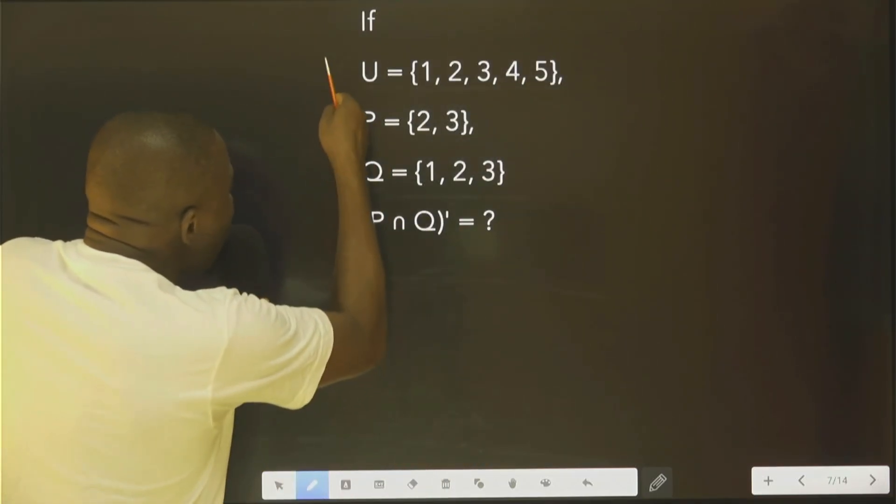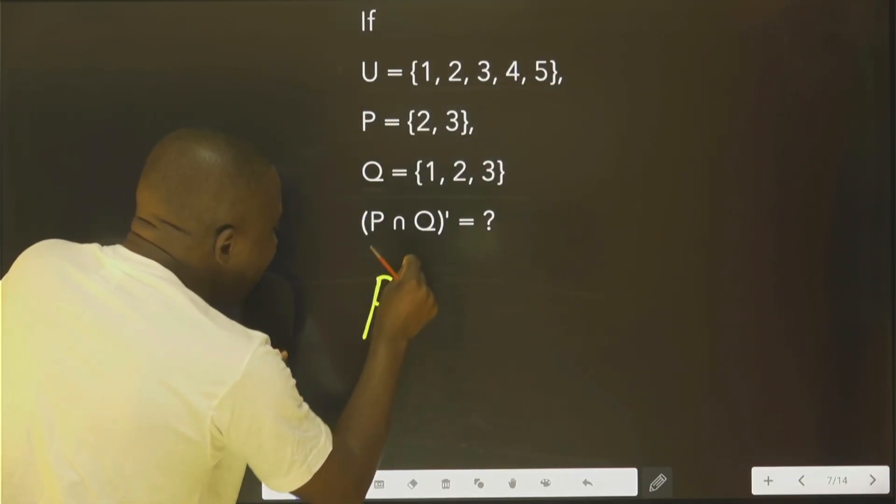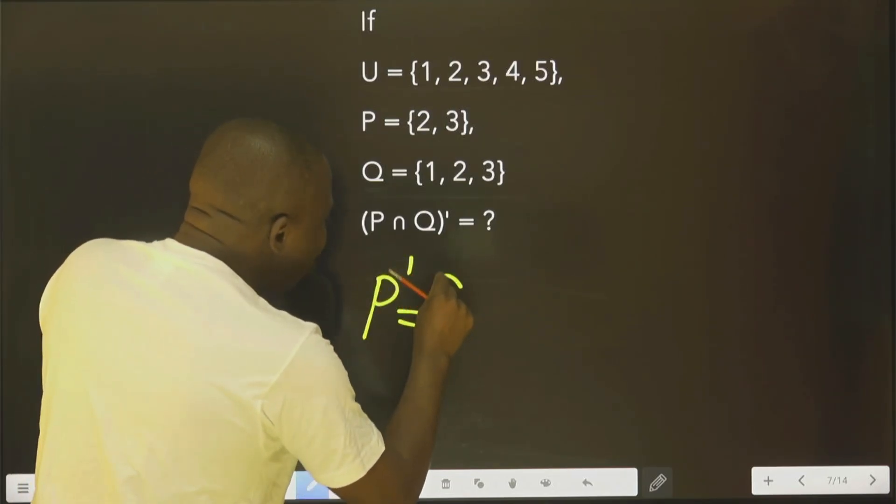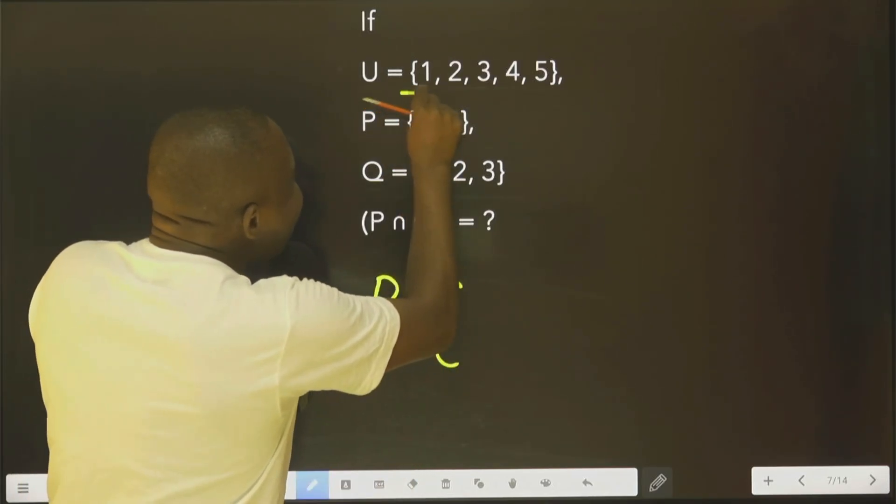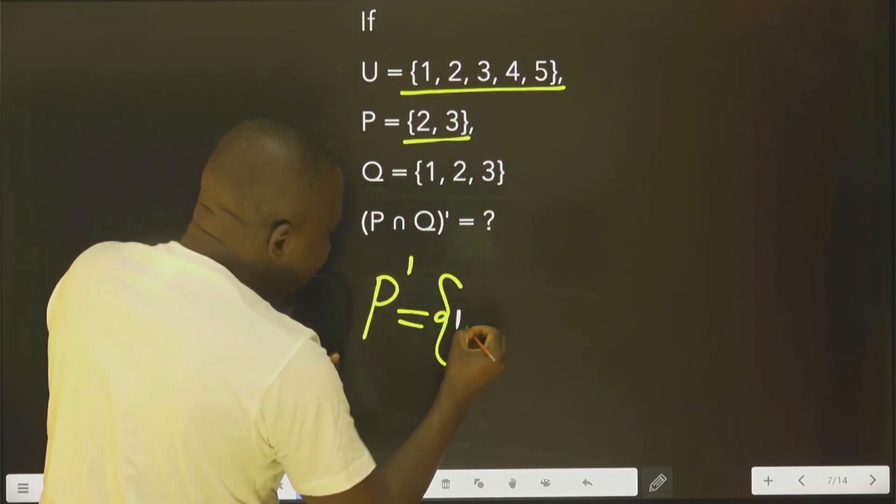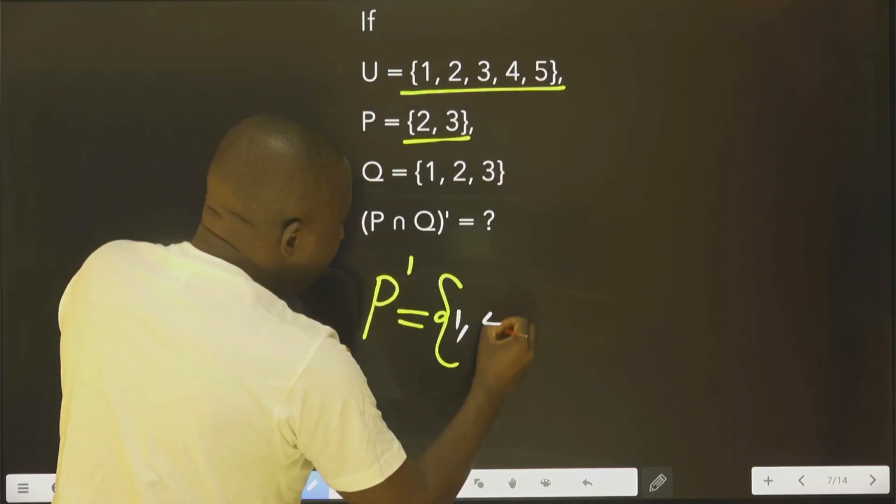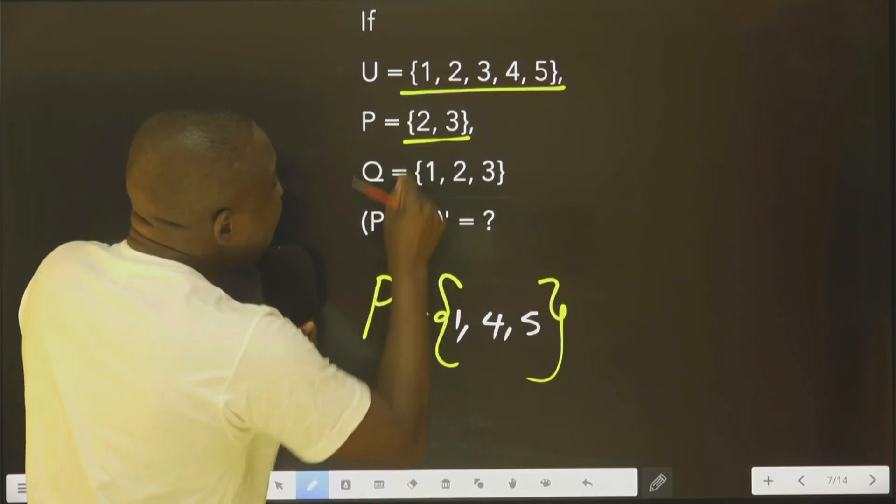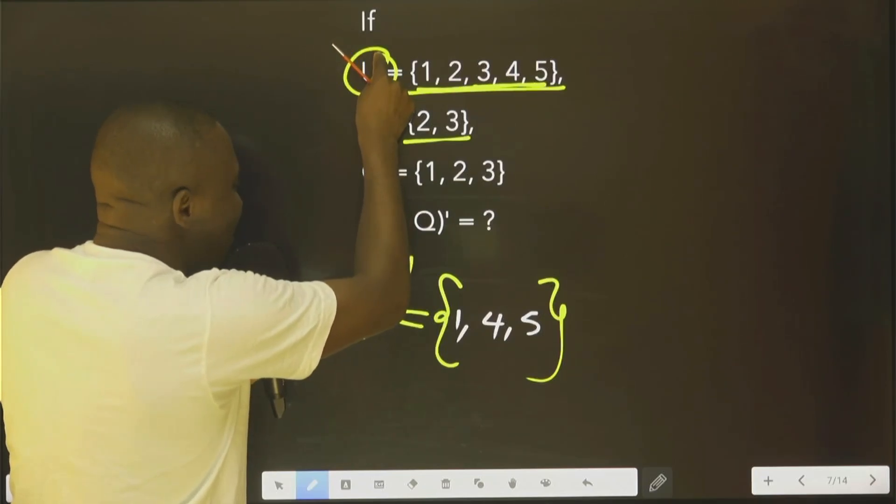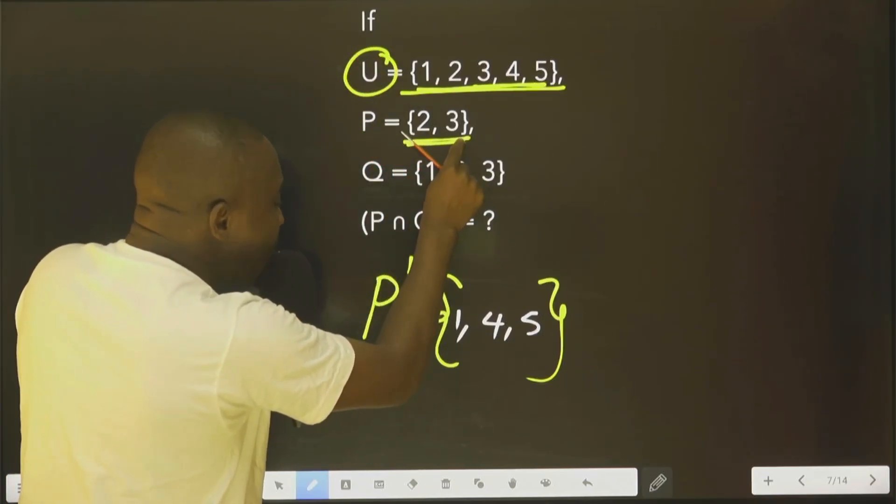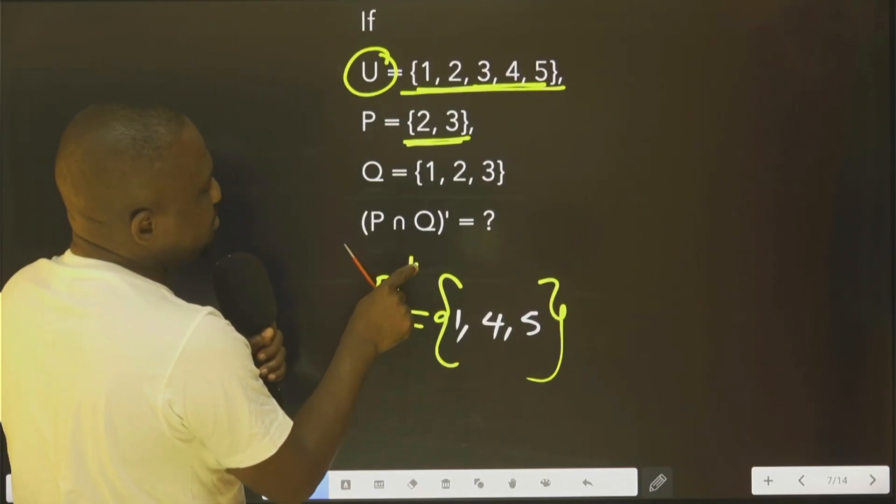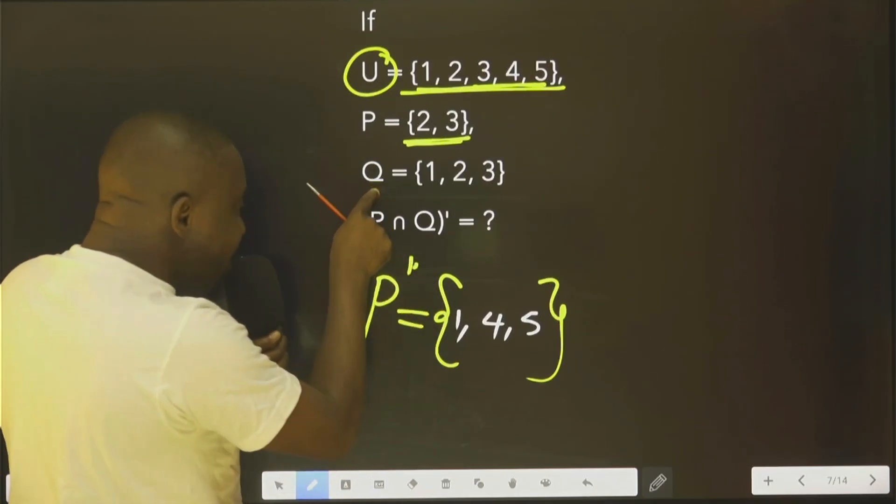For instance, if you want to find the complement of P, those are the elements in the universal set that are not in P, which are 1, 4, and 5. As you can see, these are the elements in the universal set that are not in P, so we call this P complement. You could do the same thing for Q, but